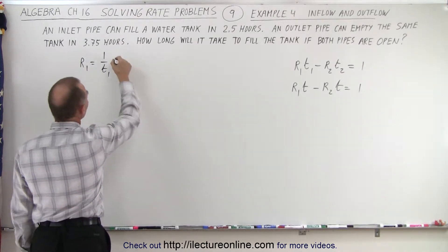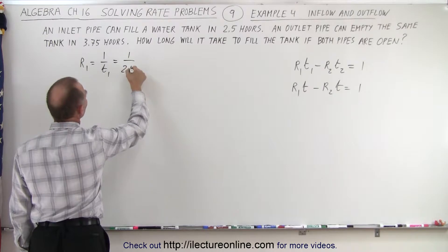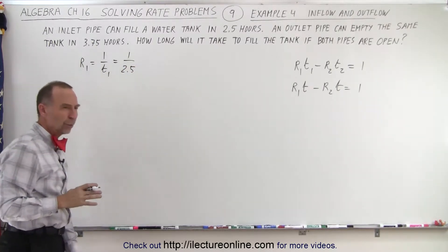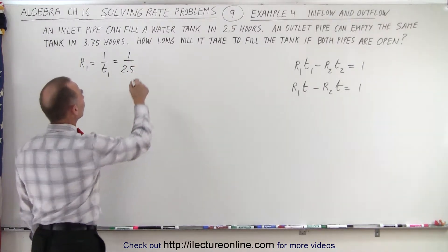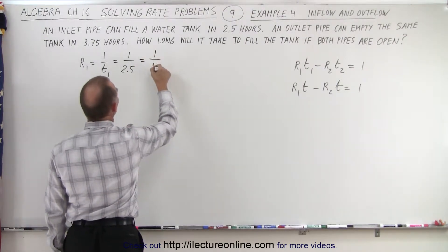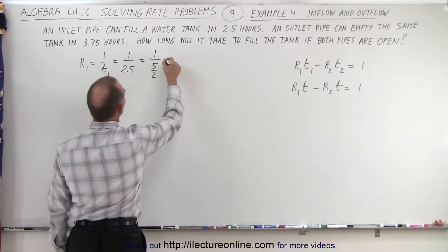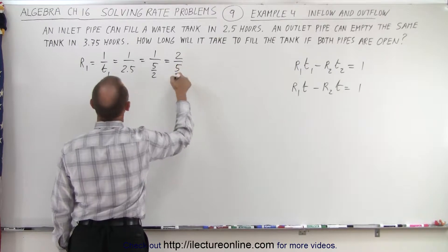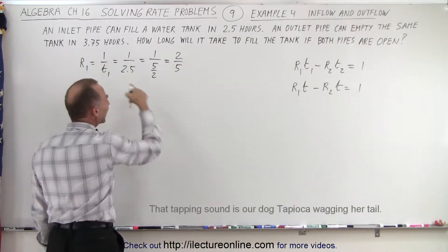So we can write it as 1 over 2.5. Or we could write 2.5 as 5 over 2. So this is equal to 1 over 5 halves, which can be written as 2 over 5. So that would be the rate of the inlet pipe.